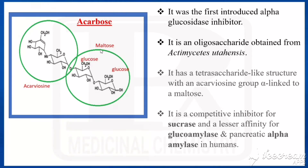Maltose is a disaccharide having two glucose monosaccharide units. In the acarbose end, the third ring is similar to glucose but has a methyl group instead of hydroxymethyl, and has an amino group instead of the expected OH or glycosidic linkage.